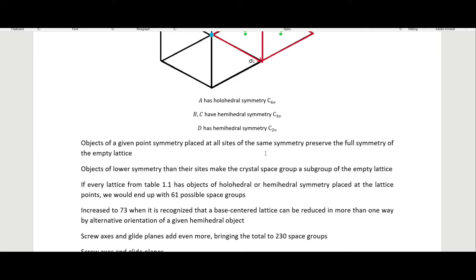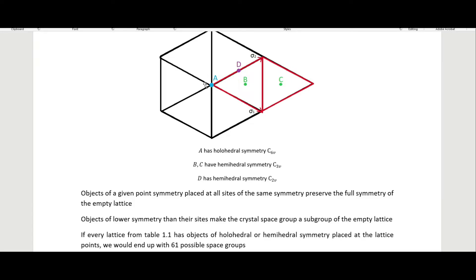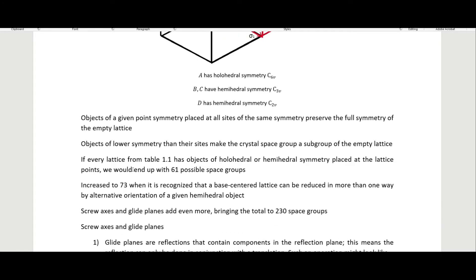Objects of a given point symmetry placed at all sites of the same symmetry preserve the full symmetry of the empty lattice. Objects of lower symmetry than their sites make the crystal space group a subgroup of the empty lattice. So if we put a C6v object at point a, the lattice remains C6v. But if we put an object of lower symmetry, like C3v, at that point, the lattice becomes a C3v lattice — a hemihedry of the holohedral C6v.